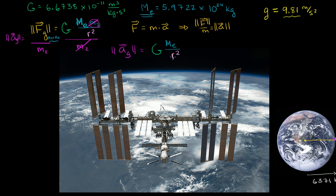So let's use a calculator to calculate what this value is, compare it to the textbook value, and also think about how it changes as we get further from the surface — in particular, at the altitude where the space shuttle or the International Space Station might be, which is around 400 kilometers.